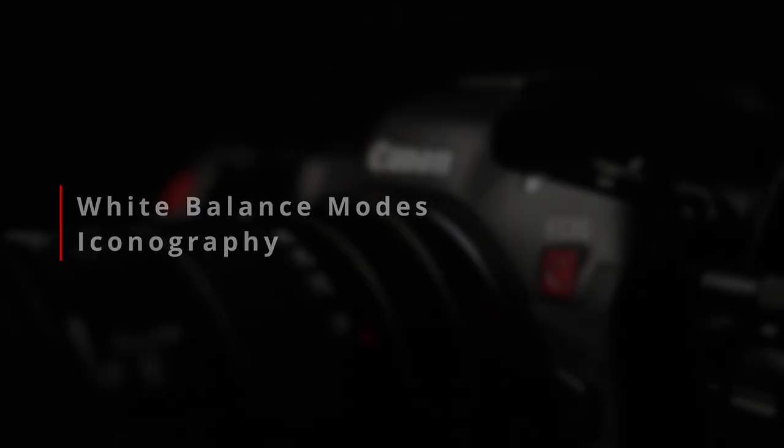So let's start this off by talking about the white balance modes that are on the cameras, the color temperature ranges that correspond to those, and the iconography that Canon uses to express this to you through the user interface. So like Canon's still cameras, Canon uses icons instead of text to describe what white balance mode you're in. So a little sun for daylight, a little lamp for light bulb for tungsten, that kind of thing.